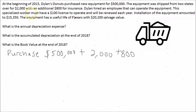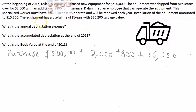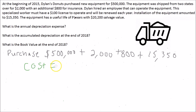Installation of the equipment amounts to $15,350. To start using that asset, you have to get it installed — the answer is yes — so installation is definitely part of the cost. Adding it all up: $500,000 purchase price + $2,000 shipping + $800 insurance + $15,350 installation gives us a total equipment cost of $518,150.